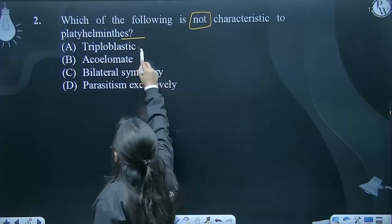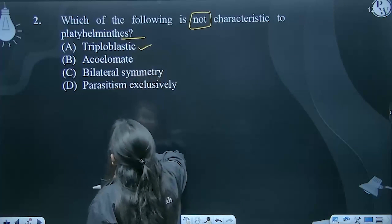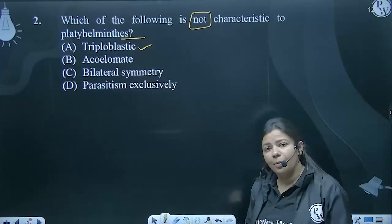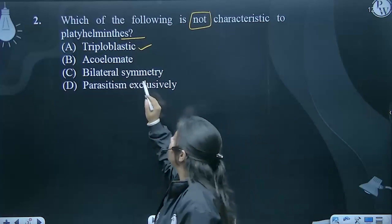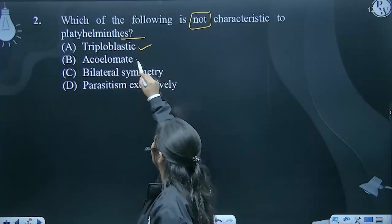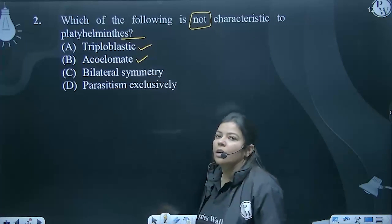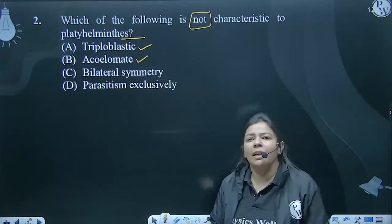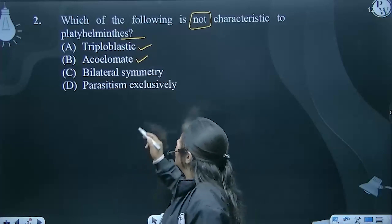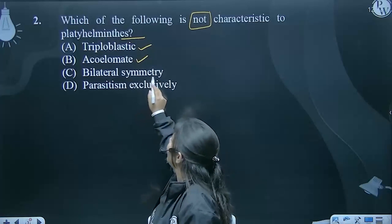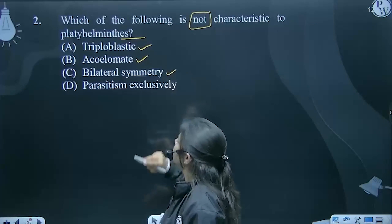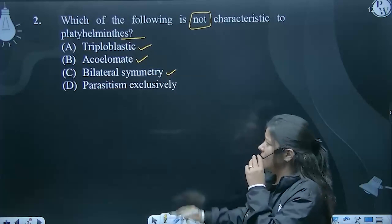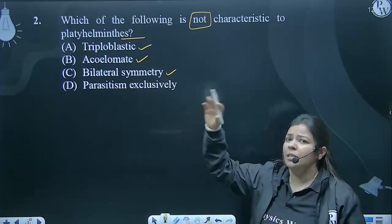All organisms belonging to Platyhelminthes are triploblastic. Then acoelomate — Platyhelminthes is acoelomate, and true coelom is present. Bilateral symmetry is also present in Platyhelminthes.